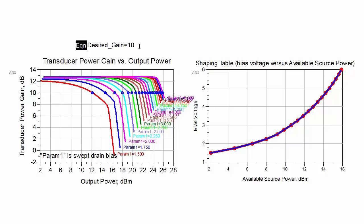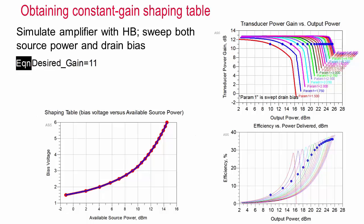Note that better envelope tracking performance may be obtained if the shaping table has finer resolution than is shown here. You can achieve this by using a smaller step size in the bias voltage sweep. This shows how a shaping table to maintain constant gain is derived.